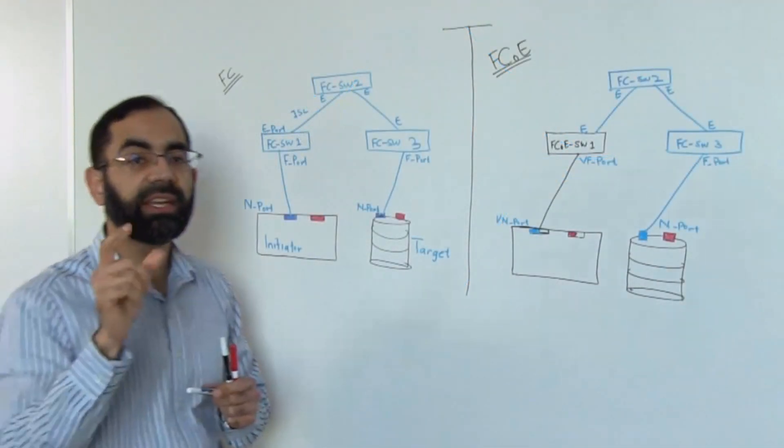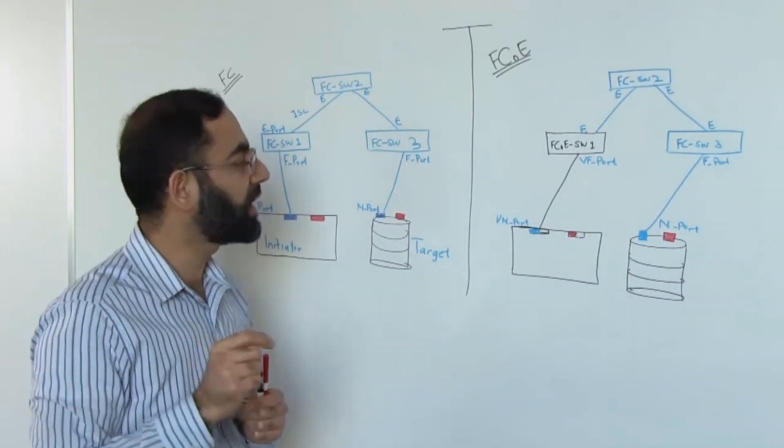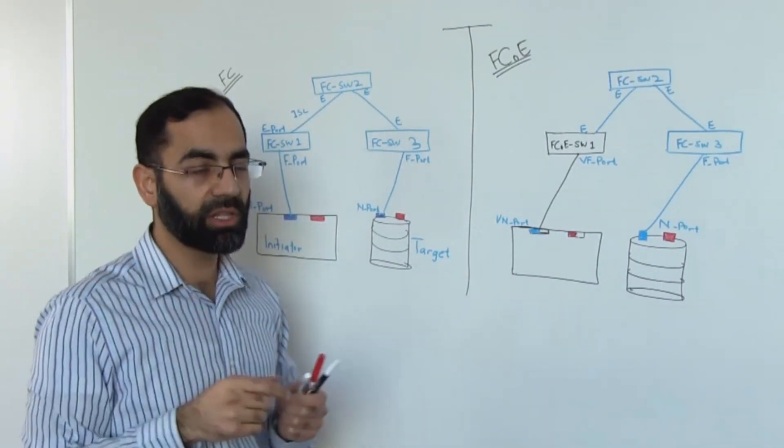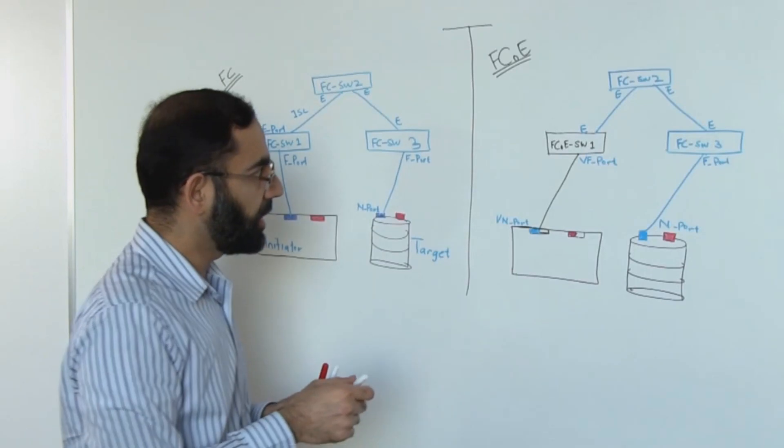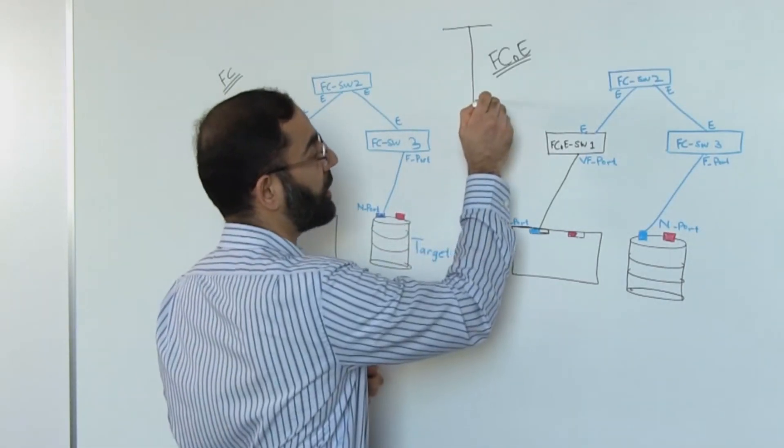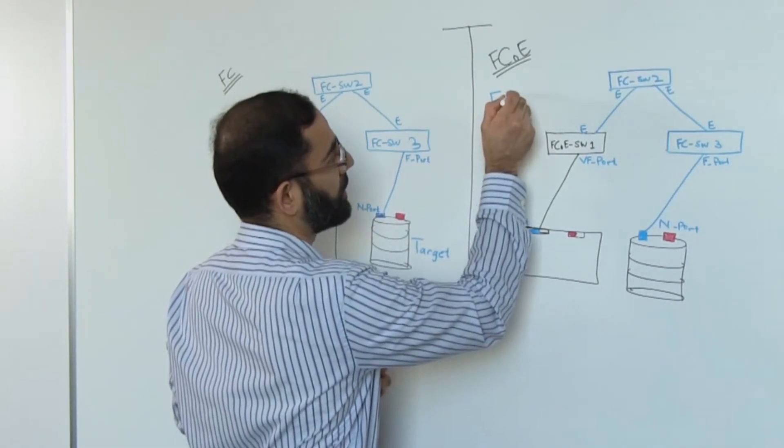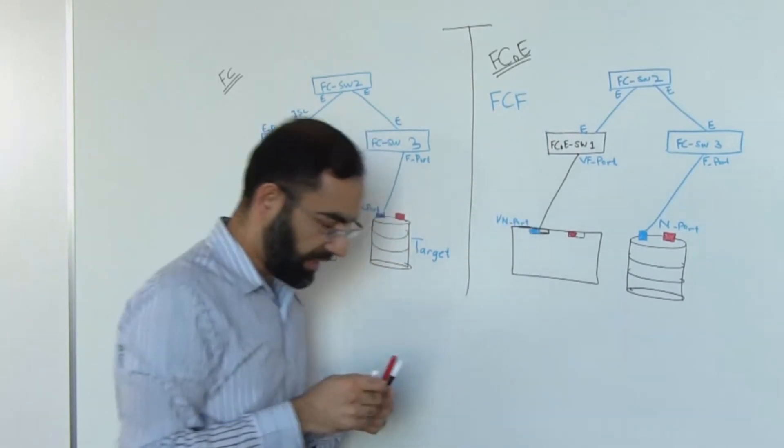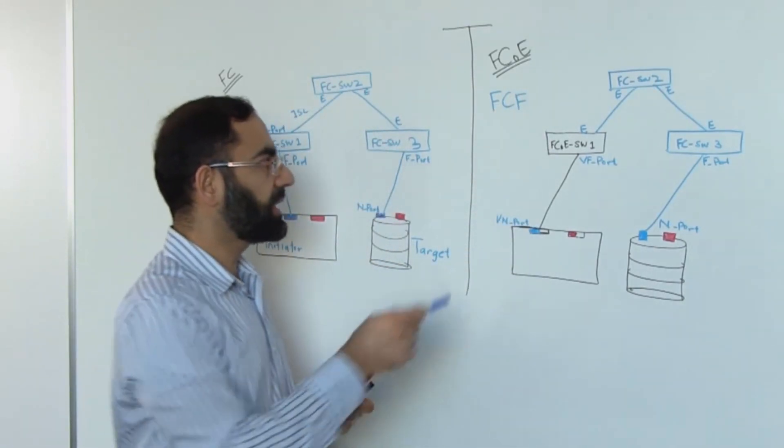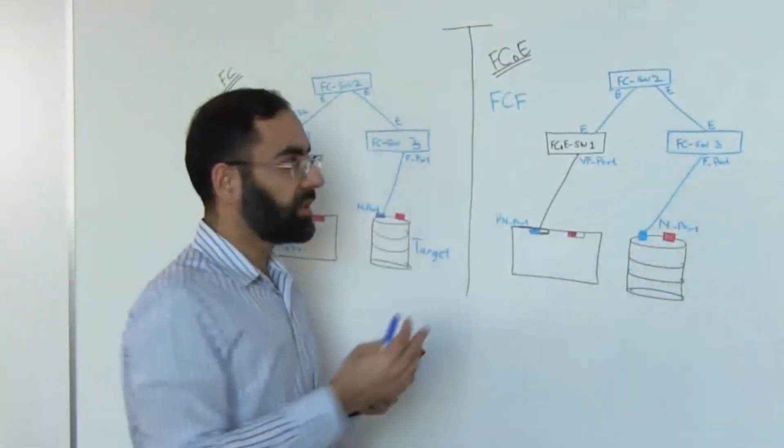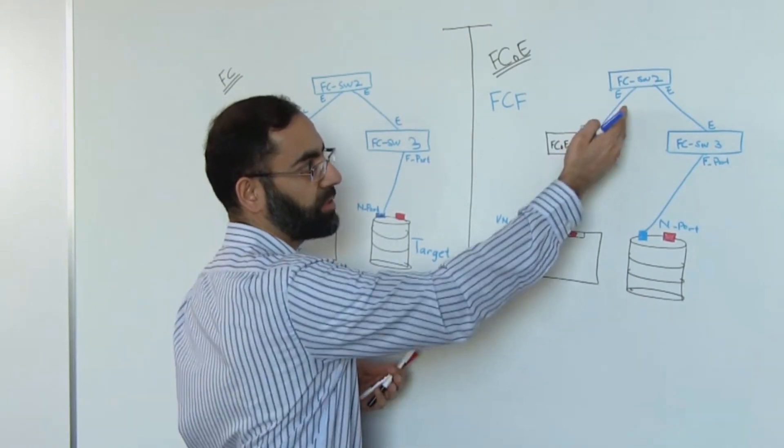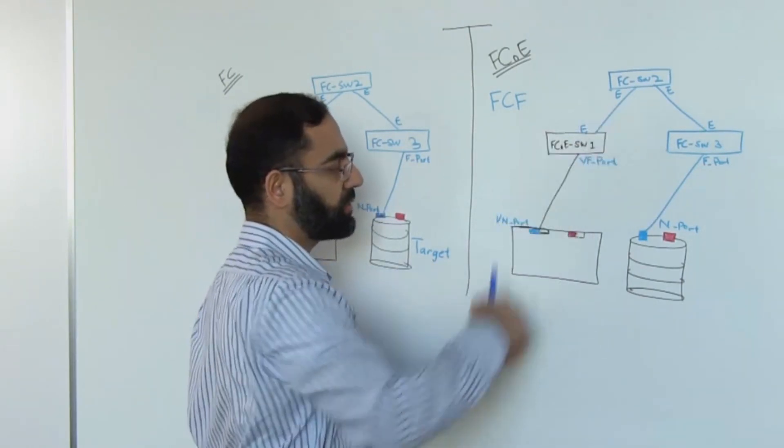You will commonly see or hear about the term FCF or Fiber Channel Forwarder. Fiber Channel Forwarder is an FCoE switch that is able to perform login services and other FC services, and it may also have ability to encapsulate and decapsulate frames that are going from FCoE environment into Fiber Channel and vice versa as well.